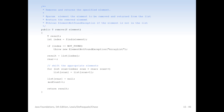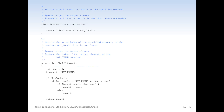In the remove method, we have a T result and an index. We call find to locate the element to remove. If it's not found — meaning we got a negative one — we throw an ElementNotFoundException. The result is set to the array at that index, we shift the appropriate elements, and we set the end of the list to null because we've shifted everything down. Otherwise that last element would just sit there. Then we increment the mod count. For Boolean contains, it really just calls find — if found it returns true, otherwise false.